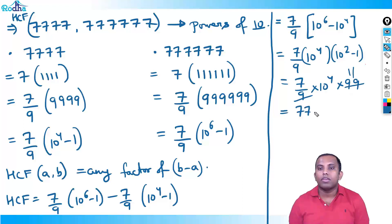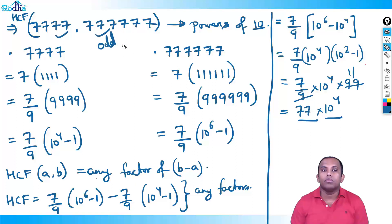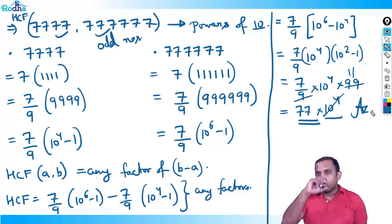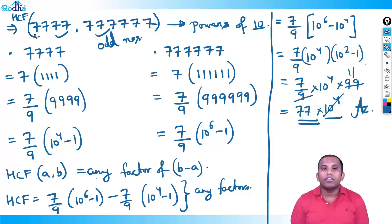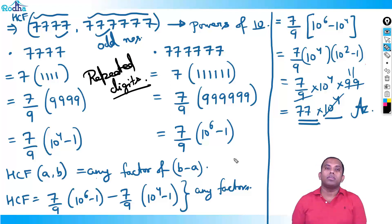The two factors are 77 and 10^4. Since 7777 and 777777 are both odd numbers, their HCF must also be odd. So 10^4 cannot be the HCF. Therefore HCF = 77. The general rule — take the HCF of the repetition counts and write the repeated digit that many times — applies only to repeated digits.